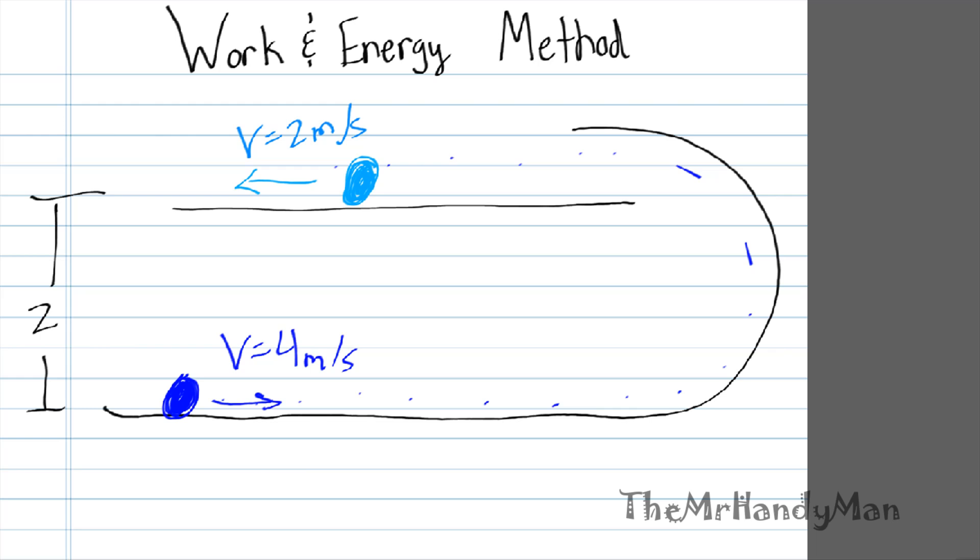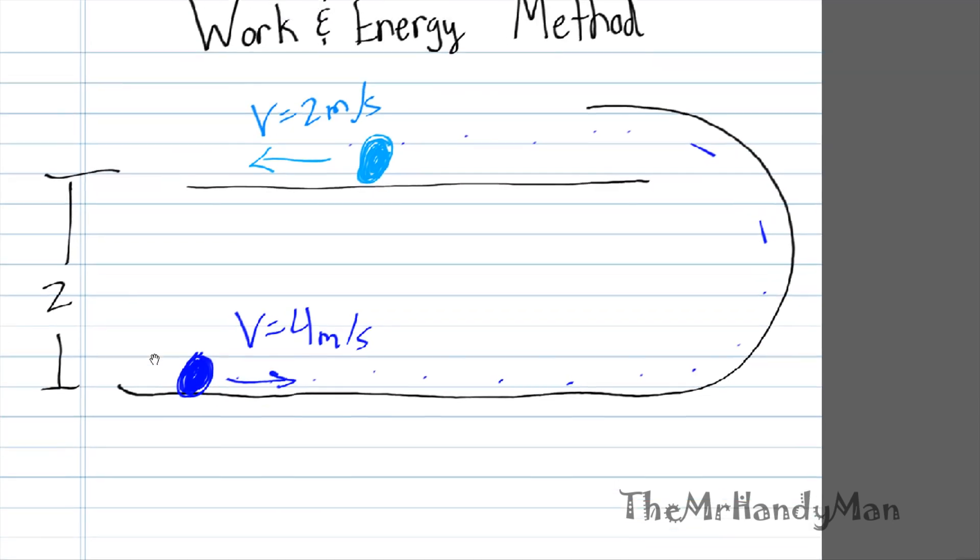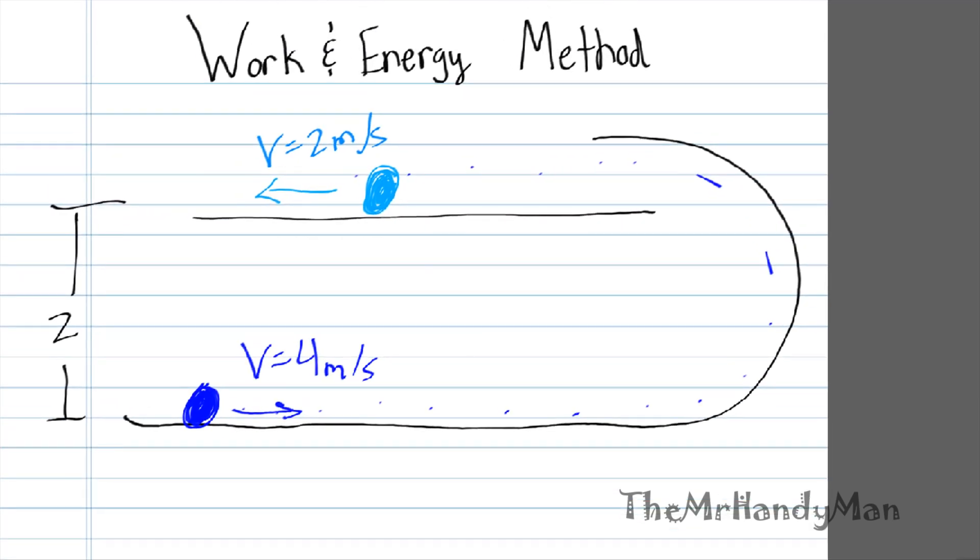Okay, so since we're going to use the first point, and I'm just going to call it A, since we're going to use the first point on the bottom as our reference point, you know that Z of A is equal to zero.